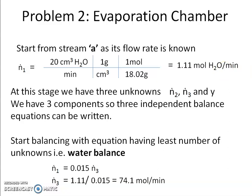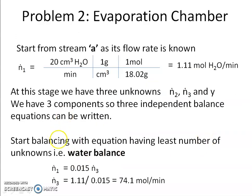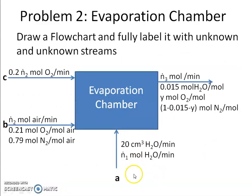I will start by writing the balance equation with the fewest unknowns. The water balance is the best choice: water enters only in stream A (n-dot-1 = 1.11 mol/min, now known) and exits in stream 3 with mole fraction 0.015. The only unknown in this equation is n-dot-3, so I can immediately calculate the molar flow rate of the outlet stream.